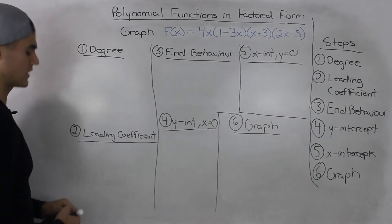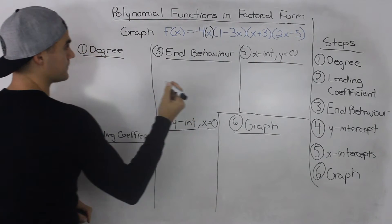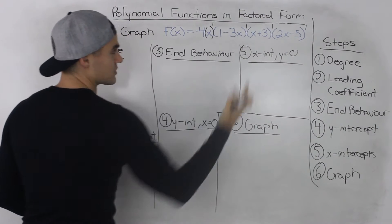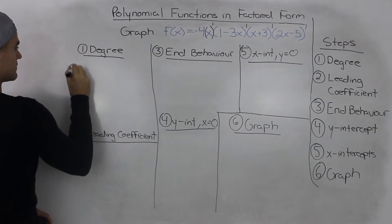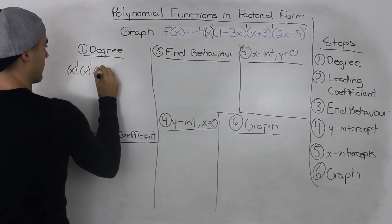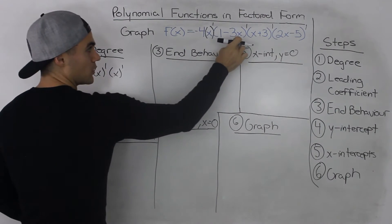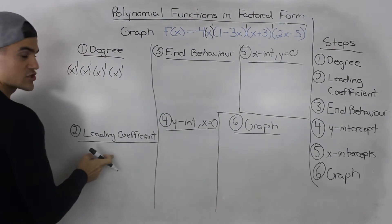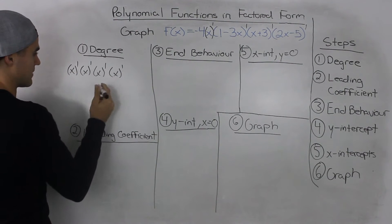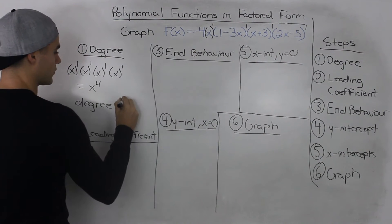Let's figure out the degree of this polynomial. We take all the x values from each bracket — each bracket is to the power of 1. We don't include the leading coefficients in front of them because we deal with those in step 2. Multiplying four x-to-the-power-of-1 terms together, we add the exponents since the bases are the same, giving us x to the power of 4. So the degree of this polynomial function is 4.